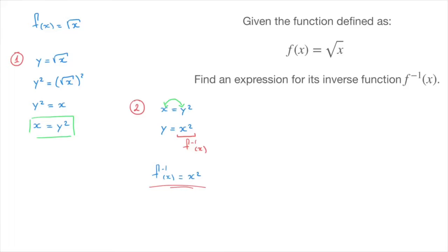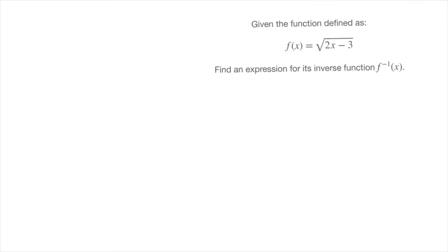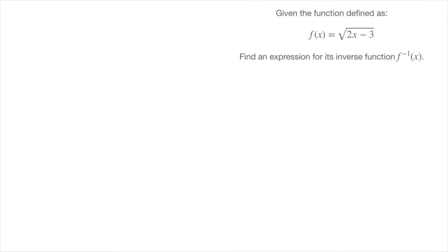Let's look at another example. We're given a function defined as f of x equals the square root of 2x minus 3, and once more we need to find an expression for its inverse function. I'll copy the function at the top of the page: f of x equals the square root of 2x minus 3. To find the inverse function, we follow the same two steps.